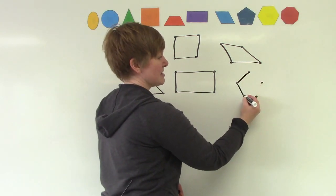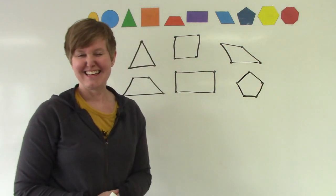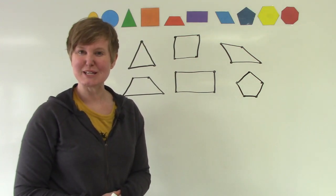The dots are our corners or our angles. That five-sided shape is a pentagon.